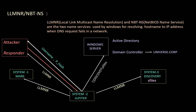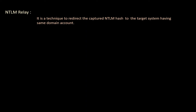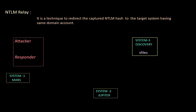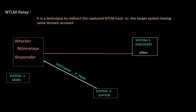Now let us see how the attacker can use this credential to perform an NTLM relay attack. NTLM relay attack is a technique to redirect the captured NTLM hash to a target system which has the same domain account. The attacker system runs Responder to receive user credentials. Once the attacker receives the domain user credential, it redirects those credentials to the target system using a tool like ntlmrelayx and executes any command or creates a reverse shell.